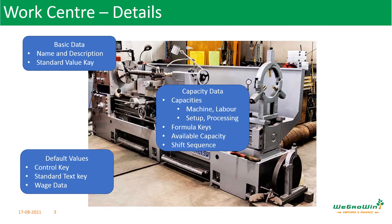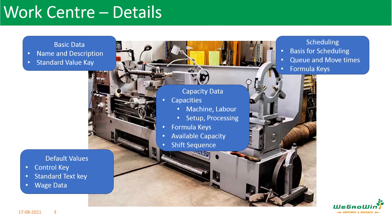Then we have capacity details. In the capacity screen, we see how the available capacity at the work center is calculated. More than one capacity — like machine capacity or labor capacity — can be entered. How to calculate the setup capacity, how to calculate processing capacity through formulas, and how the shift sequence has to be defined — those parameters are defined in the capacity data view.